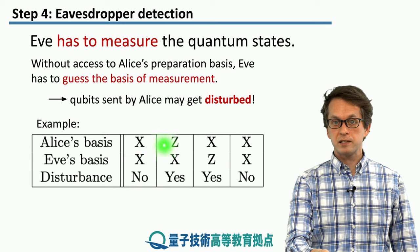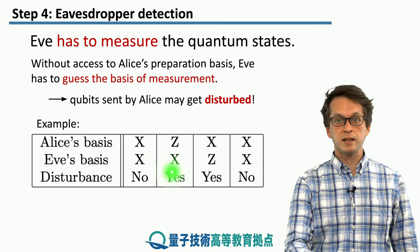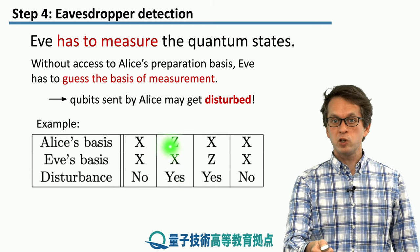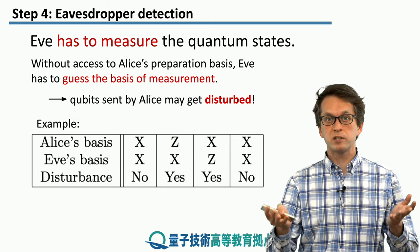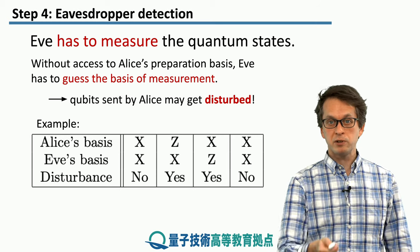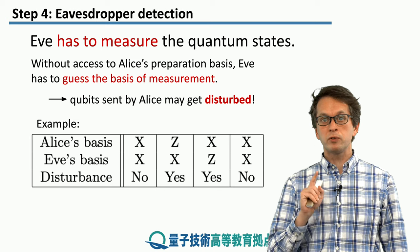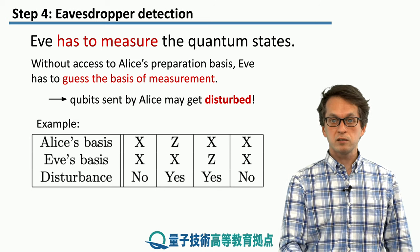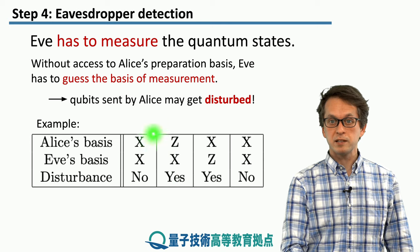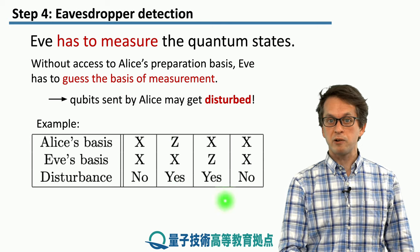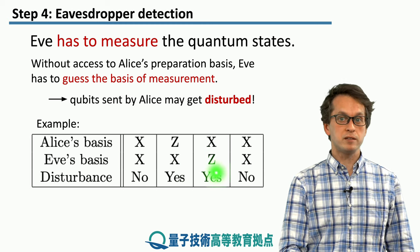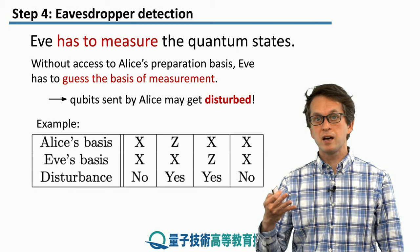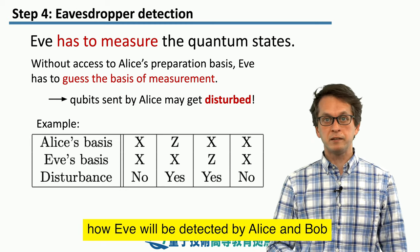However, in the second case, let's say Alice's preparation basis is z and Eve's measurement basis is x. The qubit originally prepared by Alice was either in a zero state or a one state — the two possible states in the z basis. But by measuring in the x basis, Eve is now projecting onto either a plus state or a minus state. So she has disturbed both the basis and the state. Similarly, this occurs when Alice prepares in the x basis and Eve measures in the z basis. This is the main principle by which Eve will be detected by Alice and Bob.